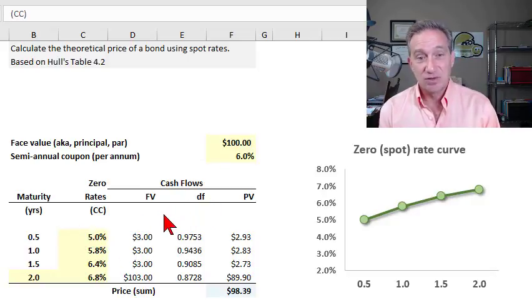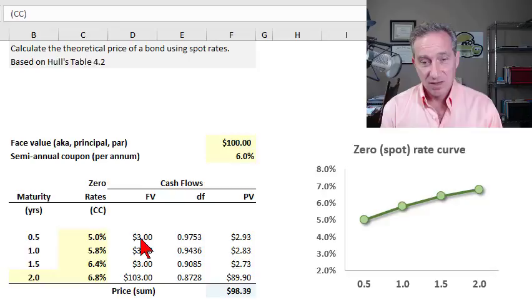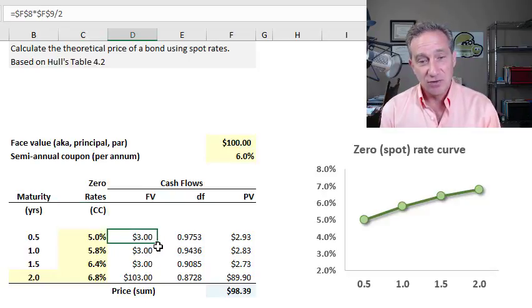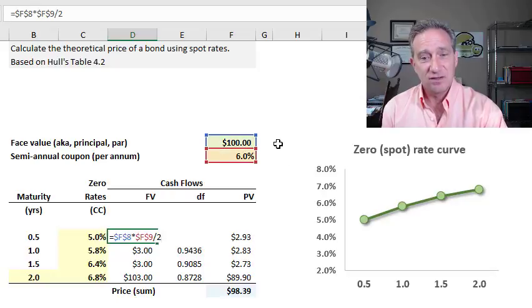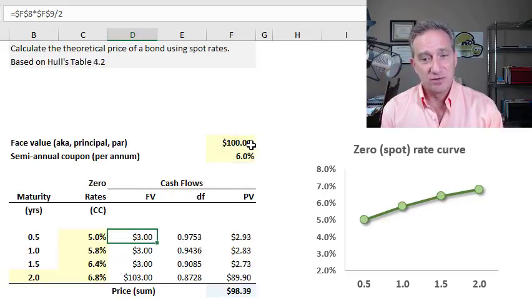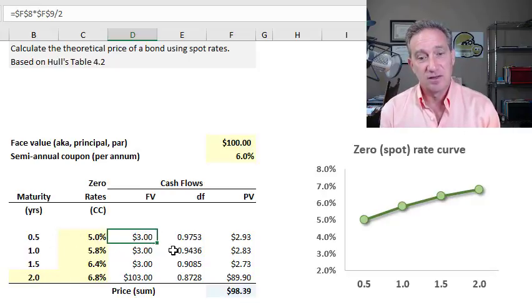So that we can now compute the theoretical price of the bond. Because here, the schedule of future values, well, we already know that each coupon is one hundred dollars multiplied by six percent divided by two, because each coupon is every six months and our schedule is six months maturities.